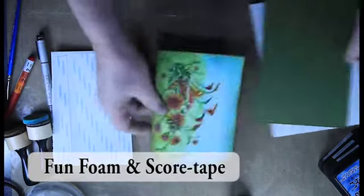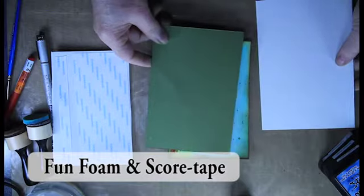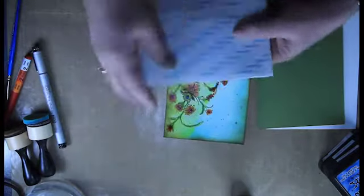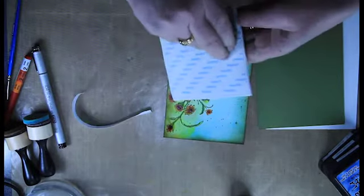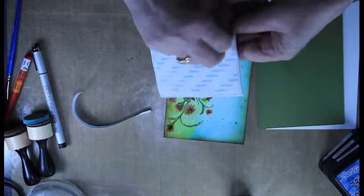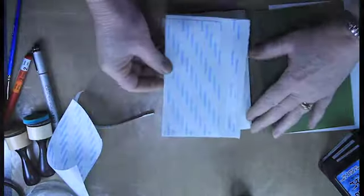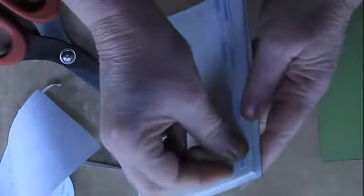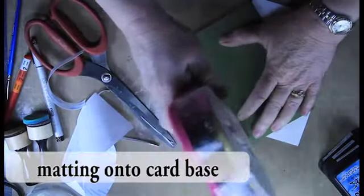Here I use Fun Foam. Because watercolor paper, especially with the amount of water that's been added, tends to ripple, getting a good adherence to your card base can sometimes be a bit tricky. The Fun Foam and Scor Tape seems to solve this issue.